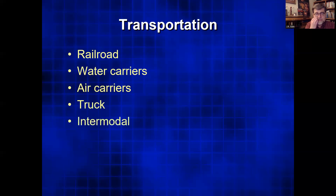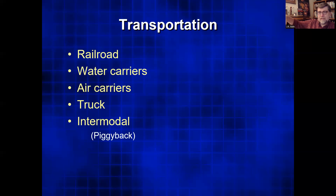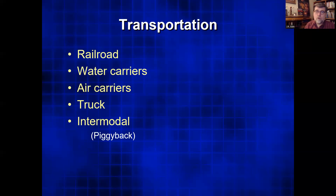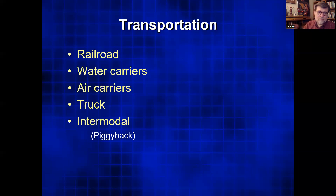To facilitate transfers between modes, a lot of intermodal or piggyback containers have been created — you have a container that can sit on a boat, and with a crane, it can be picked up and placed on a flatbed railroad car or on the back of a truck. This way you don't have to unpack the merchandise. A lot of people have been working on improving the transportation of goods because that can save a lot of money.